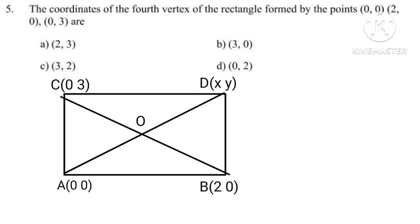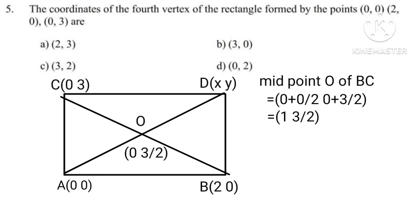Diagonal of rectangle bisects each other. Therefore, midpoint O of BC equals 0 plus 2, 3 plus 0 halves equals 1 and 3 halves. For D of AD, X plus 0 halves equals 1, hence X equals 2. Also, Y plus 0 upon 2 equals 3 upon 2, Y equals 3. Hence D is 2, 3.